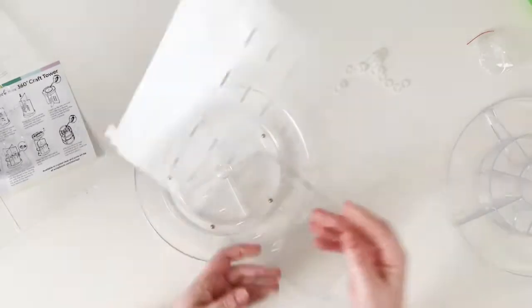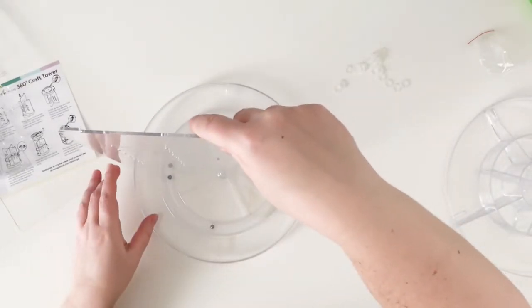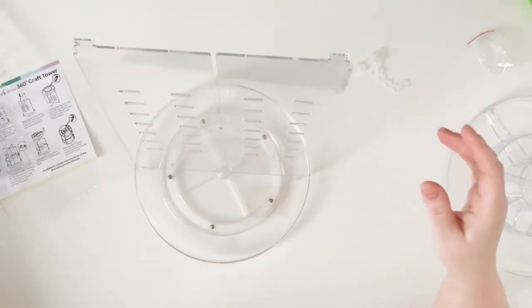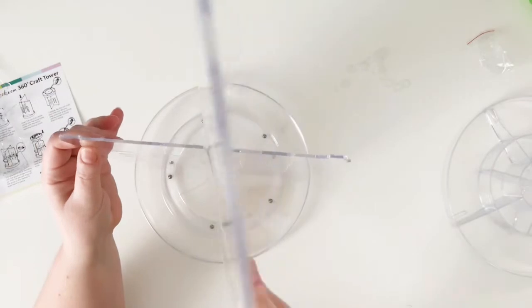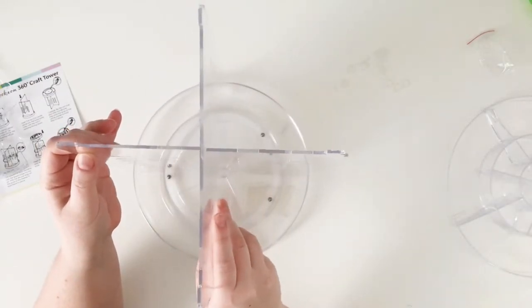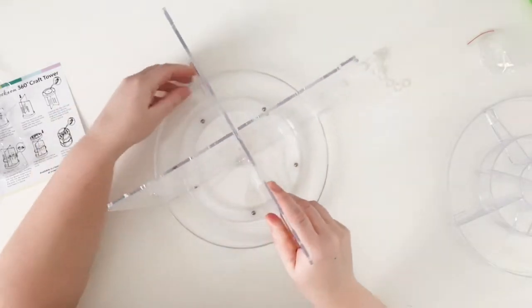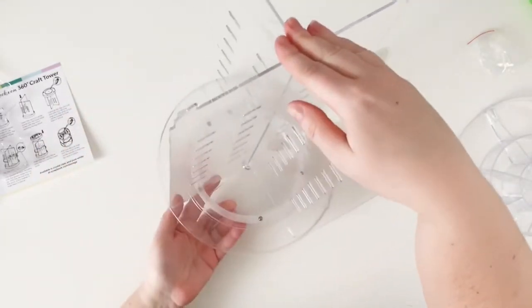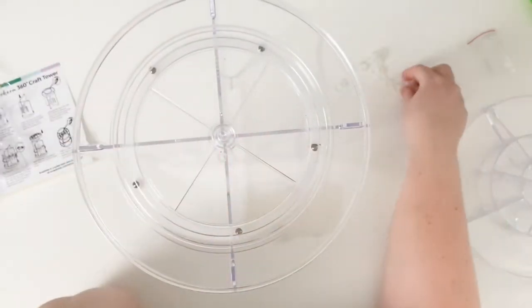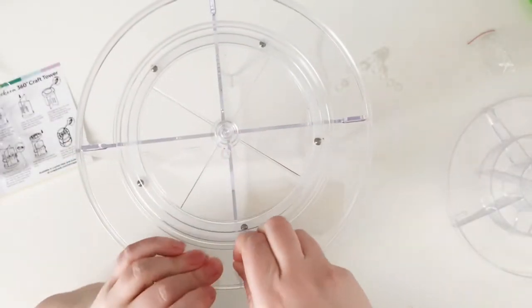You need to start with the rotating base and place one of the bigger plates in the middle of it, with the opening in the middle on the top. Then add the second part, crossing them together and trying to fit into the openings in the base.